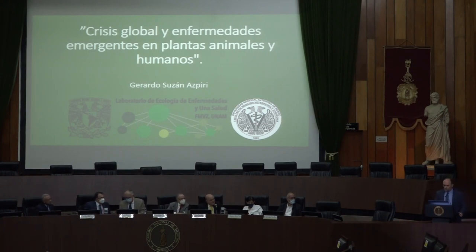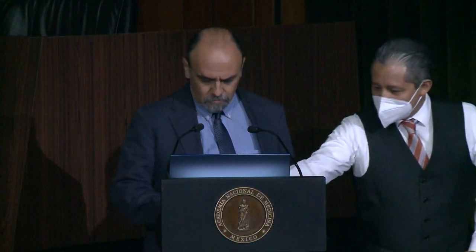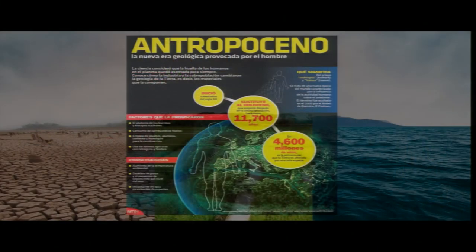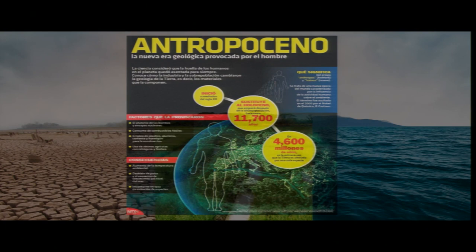Muchas gracias al doctor Armando Mateos por la buena introducción al tema, y gracias a la mesa directiva por permitirnos estar aquí desde esta visión transdisciplinaria. Quiero hablar de algunos ejemplos que están demostrando la conexión que hay entre todos los seres vivos y cómo el sistema inmune en todos está siendo hackeado por una serie de cambios que hemos hecho en el planeta. Estamos en una época que se está denominando el Antropoceno, una época geológica en la que los impactos que estamos haciendo se están reflejando en todas las capas tanto del suelo como en el aire.